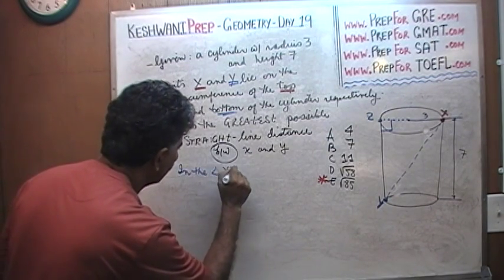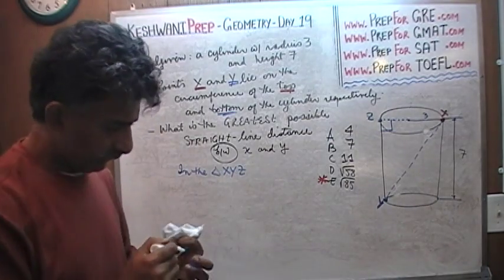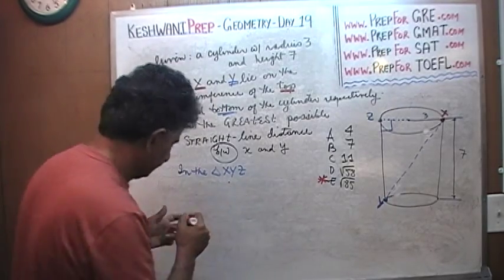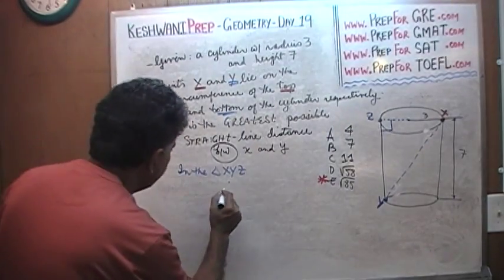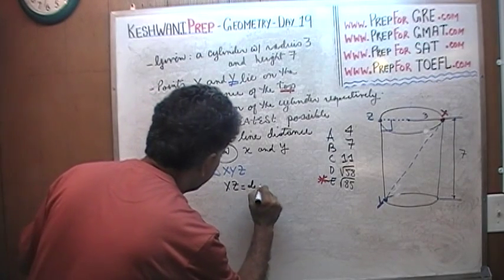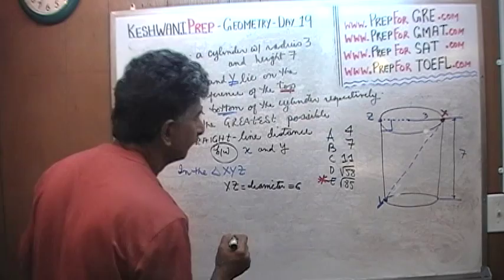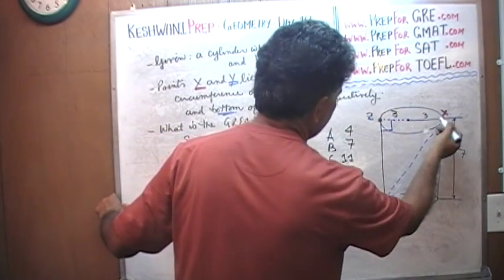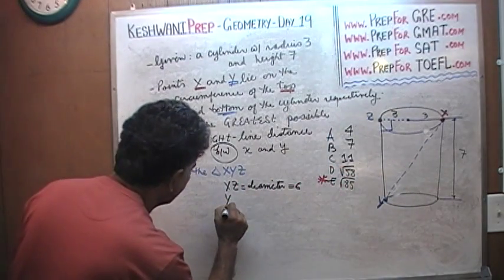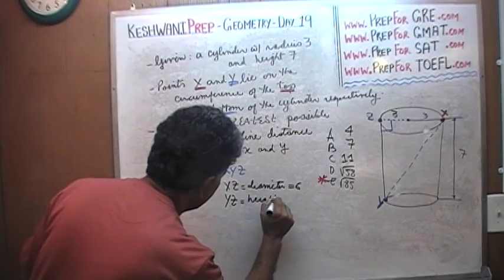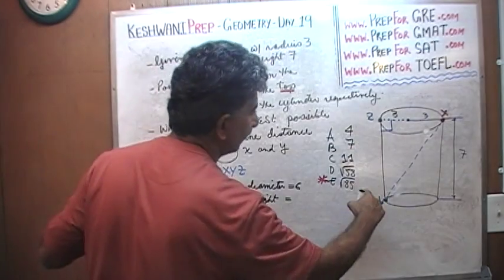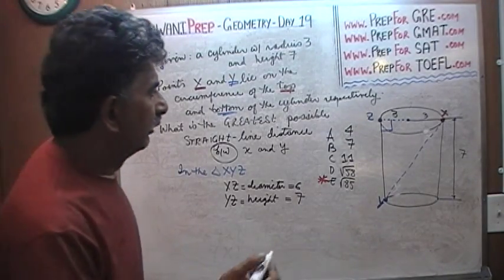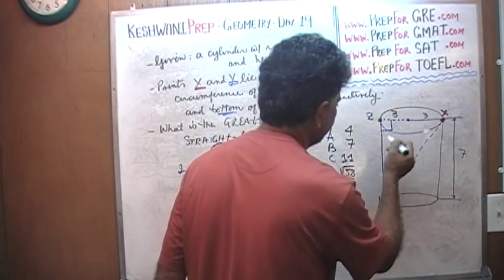In the triangle XYZ, X to Z is the diameter, which is 6. From here to here is also 3. How much is Z to Y? Z to Y is the height of the cylinder. Y to Z is the height of the cylinder, which is 7.